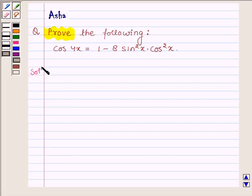So let us begin with the solution. We will start with the left hand side of the problem and show that it is equal to 1 minus 8 sin square x into cos square x.